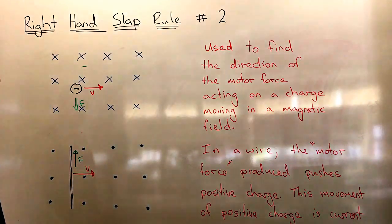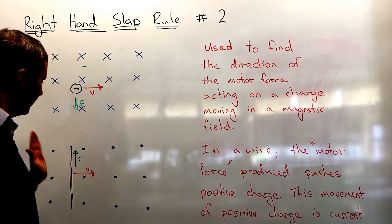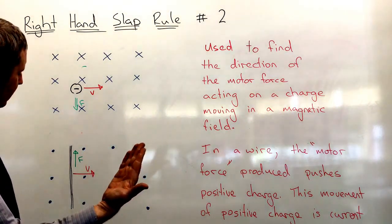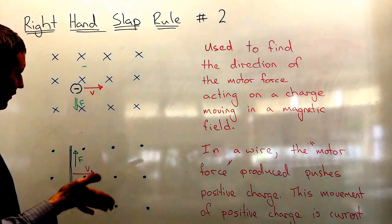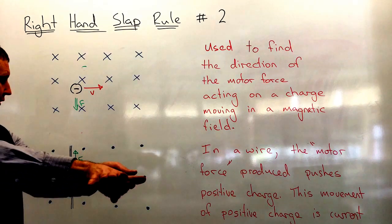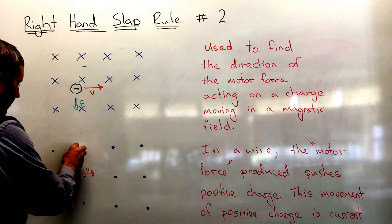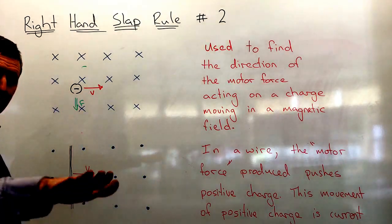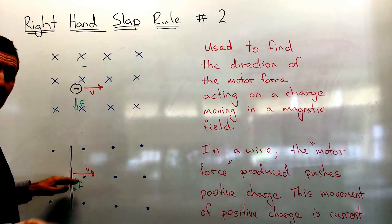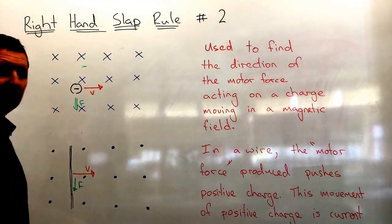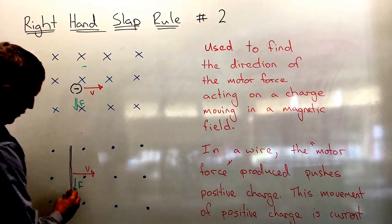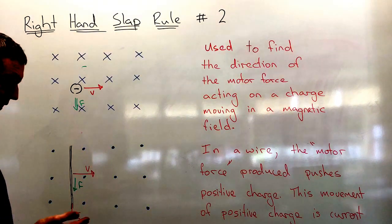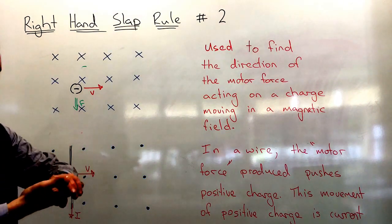Next, what if it's not just a charged particle but a whole wire moving through a magnetic field? The wire is moving at a certain velocity. Using the right-hand slap rule again — thumb shows the direction the wire is moving, fingers show the magnetic field direction, which is coming out of the page — the force is going downwards. What is actually being forced downwards is the positive charge inside the wire, which is being pushed downwards.